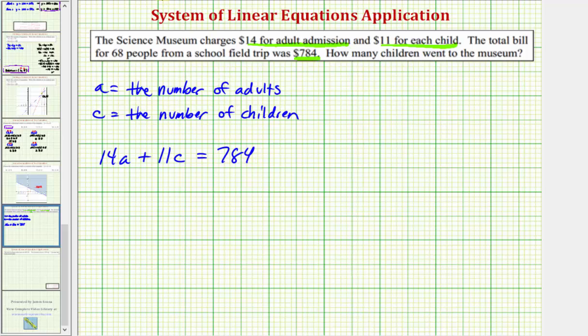For the second equation, we know that 68 people attended from the school. Therefore, A plus C must equal 68.